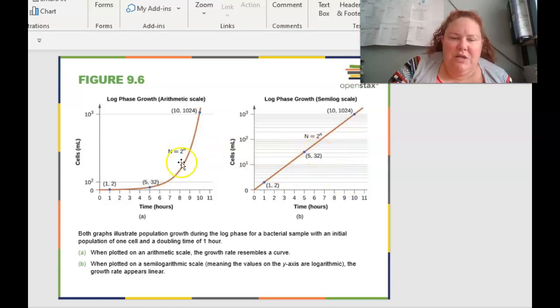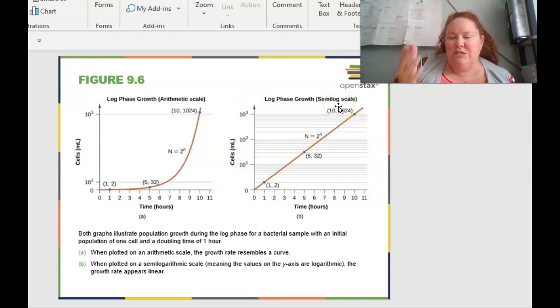These graphs are both going to illustrate the population growth during the log phase of bacterial sample with an initial population of one cell and the doubling time of one hour. But over here in A, when plotted on an arithmetic scale, the growth rate is going to resemble a curve, but when it is plotted on a semi-logarithmic scale, this means that the values on the y-axis here are logarithmic, then the growth appears to be linear. It's the same data, just shown a little bit differently.